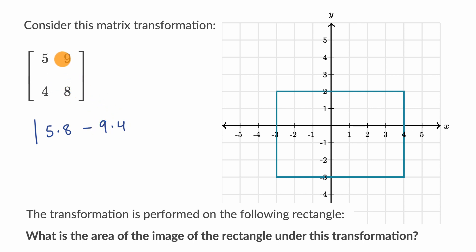Remember for a two by two matrix, the determinant is just this times this minus this times that. And so that's going to be the absolute value of 40 minus 36, which is just the absolute value of four, which is just going to be equal to four. So this tells us that this transformation will scale up area by a factor of four.